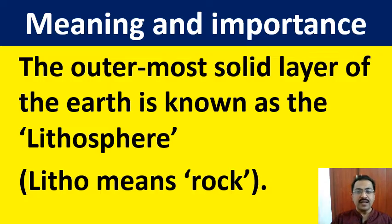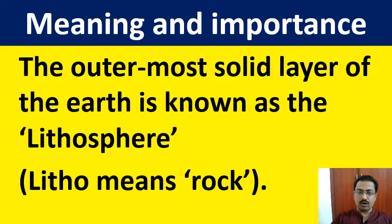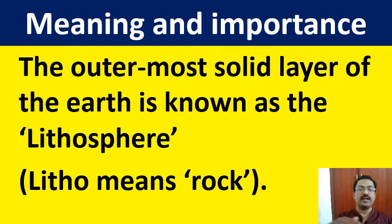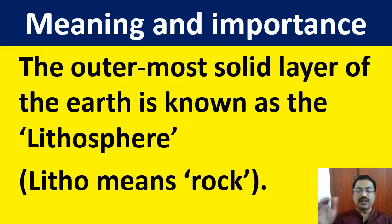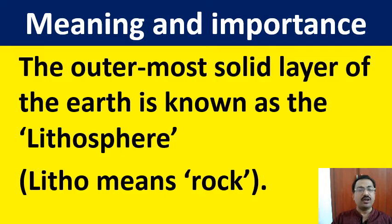Now let us see the meaning and importance of Lithosphere. The word Litho means rock, so you can understand it as the area of rock. Generally, it is understood as the uppermost layer of the earth. The outermost solid layer of the earth is known as Lithosphere. Litho means rock.